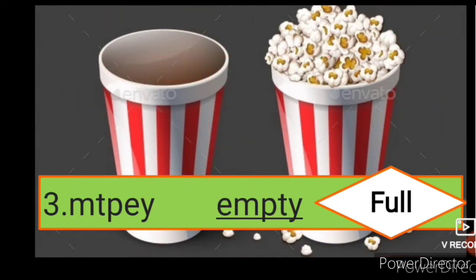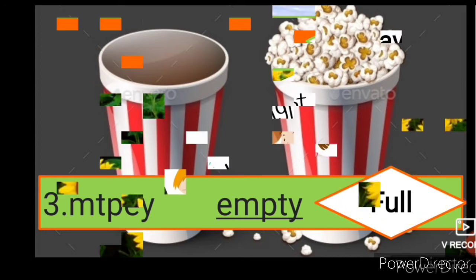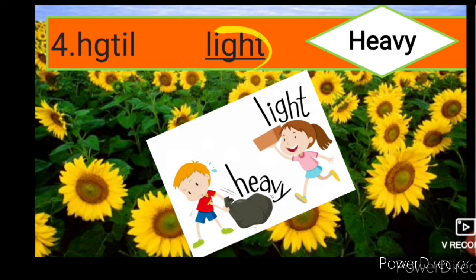Next is M-T-P-E-Y. When we rearrange it we will get empty, and the opposite of empty is full, F-U-L-L. Next is H-G-T-I-L. When we rearrange it we will get L-I-G-H-T: light. And the opposite of light is heavy, H-E-A-V-Y.